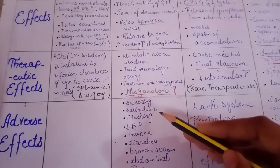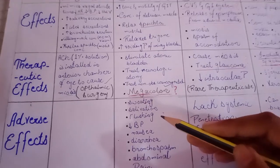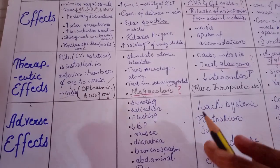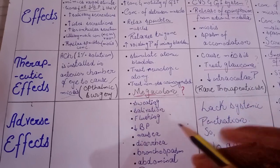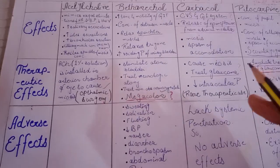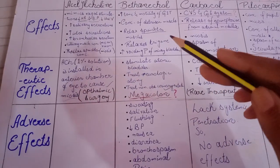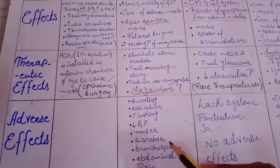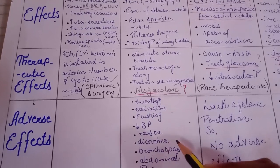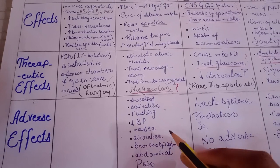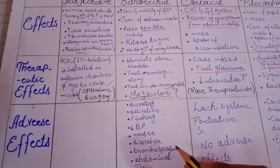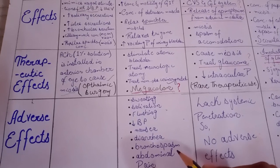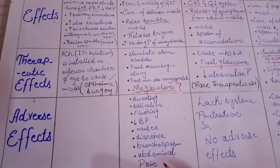The adverse effects of bethanechol include sweating and salivation from parasympathetic stimulation. This can cause increased blood flow to the skin, resulting in redness of the cheek — a condition known as flushing. Since bethanechol increases the motility of the GI tract, it results in increased bowel movement leading to diarrhea and nausea. We also know that parasympathetic effects cause bronchoconstriction and increased bronchial secretions, which would result in bronchial spasm. The last adverse effect is abdominal pain.